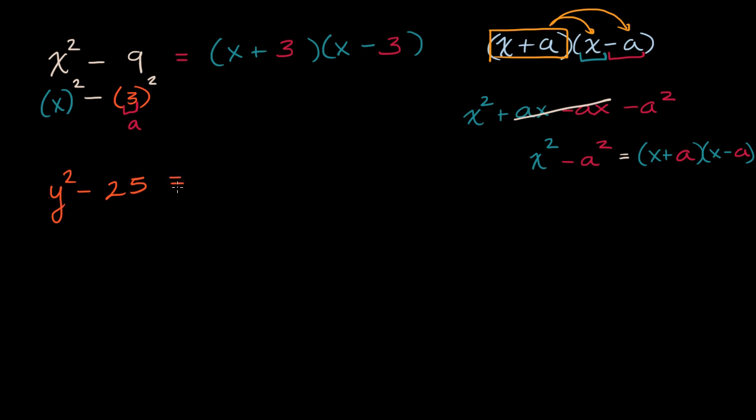In this case, you have to confirm that 25 is five squared and y squared is y squared. So it's going to be y plus something times y minus something. What is that something? Well, this is five squared, so it's y plus five times y minus five. The variable doesn't have to come first.